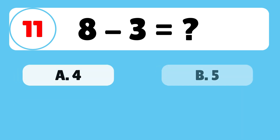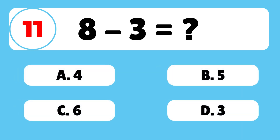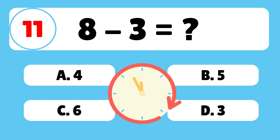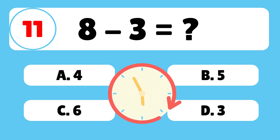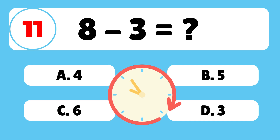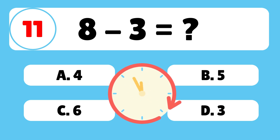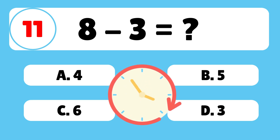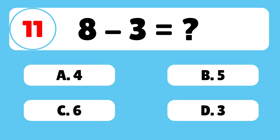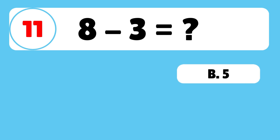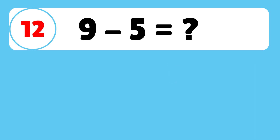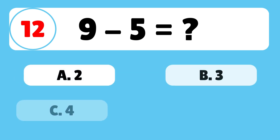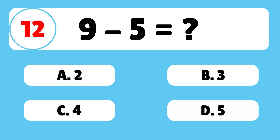Question 11: What is 8 minus 3? The answer is B. 8 minus 3 is equal to 5. Question 12: What is 9 minus 5?